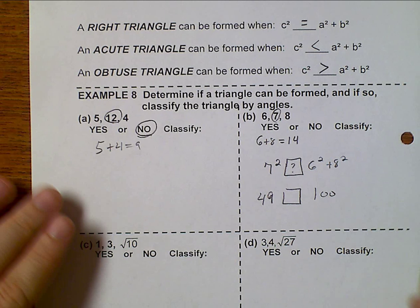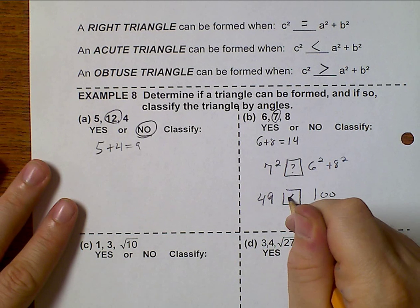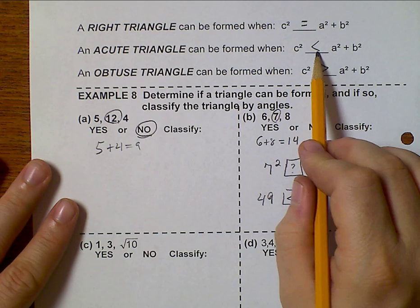Well, 49 is obviously less than 100. So I look at my rule and I get acute.